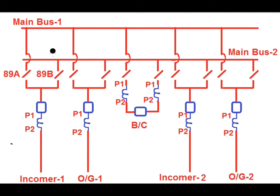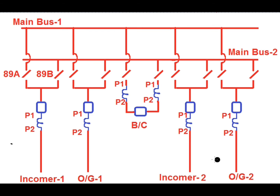Welcome back to the channel. Today I will discuss bus bar protection for a two-bus system and how the overlapping of the zone will cover faults occurring between the bus coupler CT and the bus coupler breaker. There exist two buses: main bus 1 and main bus 2, coupled by a bus coupler bay. In the bus coupler bay there exist two CTs — one connected towards main bus 1 and another towards main bus 2. There exist four feeders: two incomers and two outgoing feeders.